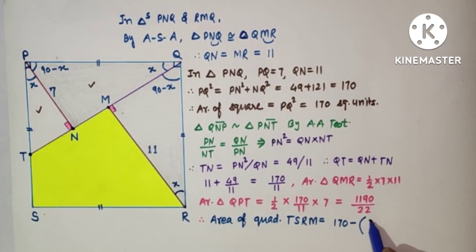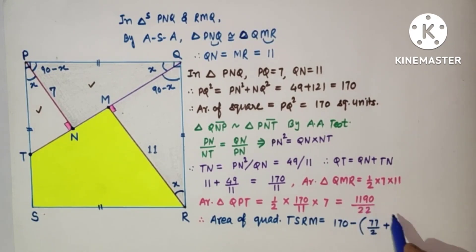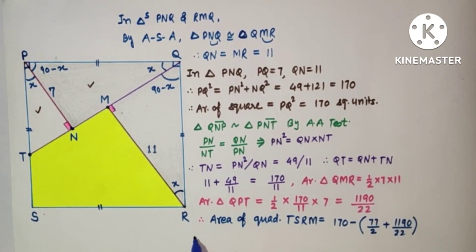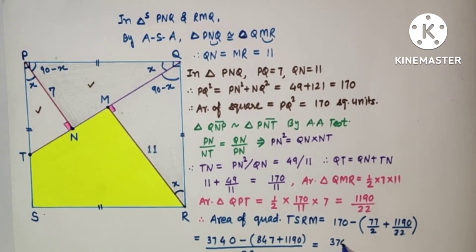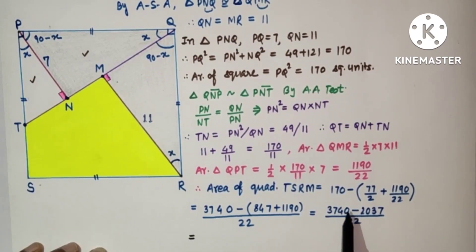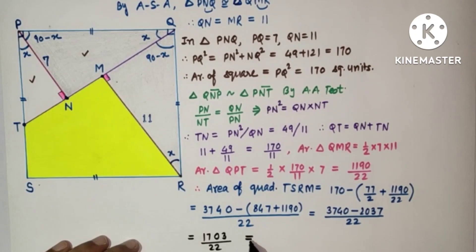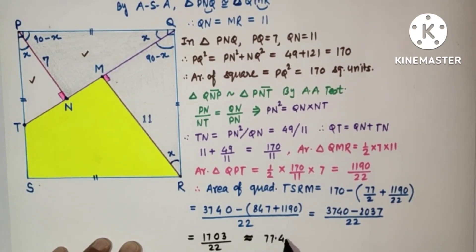Combining the calculations: 77 by 2 plus 1190 by 22. The area of quadrilateral TSRM equals 170 minus the sum of the two triangle areas, which is approximately 77.41 square units. This is the answer.